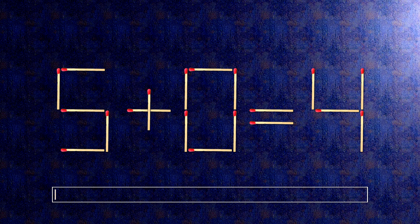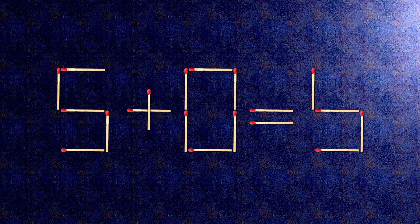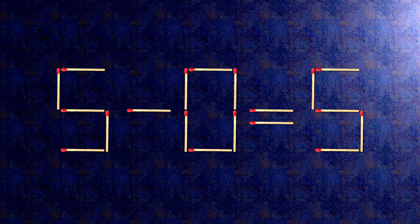How this puzzle is solved: all we need to do is move this match right here and this match right here. Now when we check the condition, 5 minus 0 is 5.